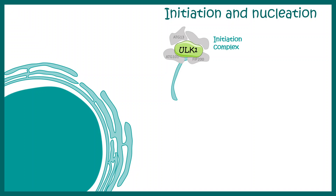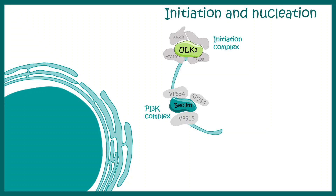Once the initiation complex has cleaved a small portion of the ER membrane, a further complex known as the PI3K complex elongates this membrane — this is known as the nucleation process. All of these steps are interrelated. Within the PI3K complex, Beclin is an important protein, though we don't need to know the intricate details of all these proteins — we need to understand the big picture.